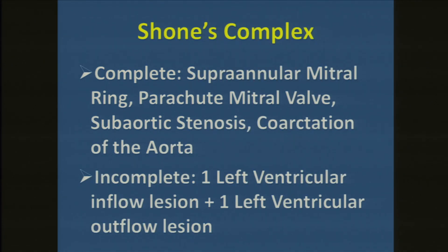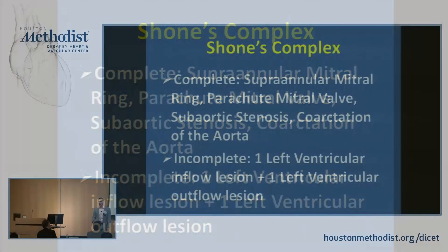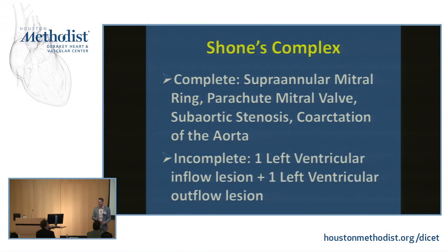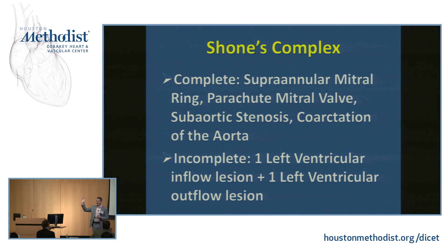So what is Shone complex? Well, there are two flavors. There is the flavor originally described by the Canadian cardiologist Dr. Shone, which is the complex of a supravalvular mitral ring, a parachute mitral valve, subvalvular aortic stenosis, and coarctation of the aorta. Now, this is about as common as a jackalope — anybody in the crowd know what a jackalope is? It exists really only in taxidermy; no one has actually seen one in real life. And this entity probably exists similarly in jars on anatomists' shelves.